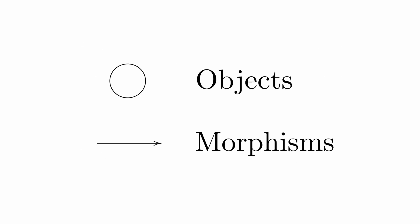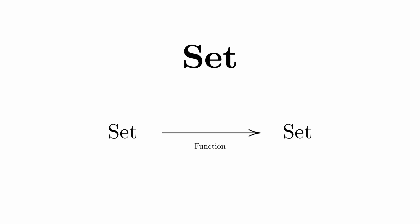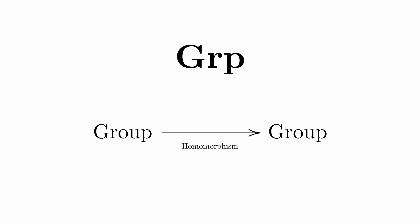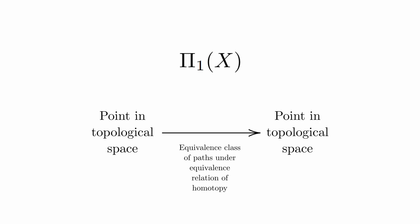And sure, you can call them objects and morphisms if you really want, but that's just going to confuse people. And we don't want to confuse people, right? To that end, here are some illustrative examples: the category of sets and set functions, the category of groups and group homomorphisms, and the fundamental groupoid of a topological space where objects are points and morphisms are path homotopy classes. And if you still aren't clear on what a category is after that, good luck.